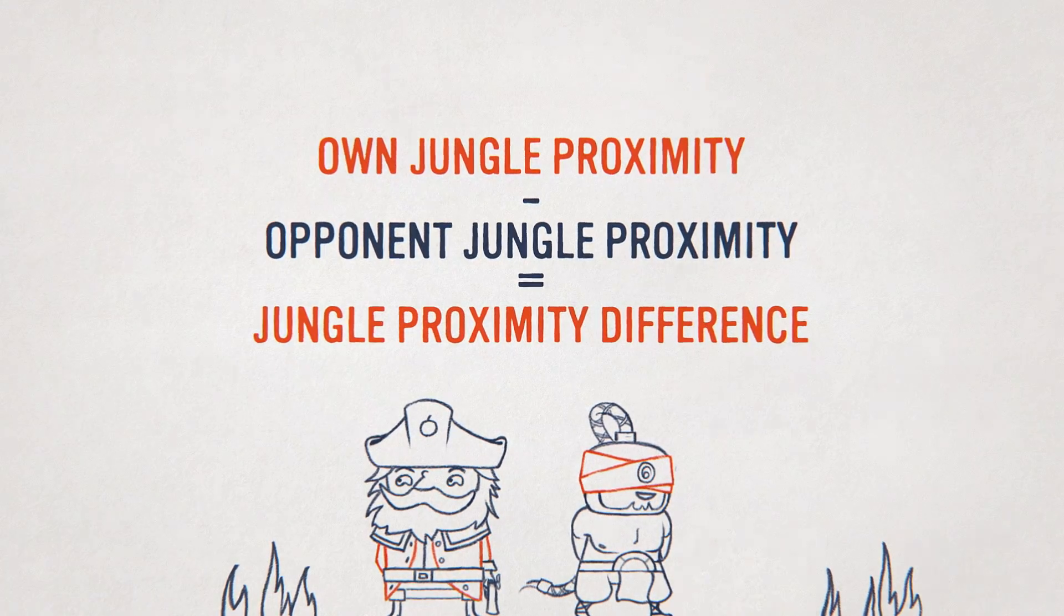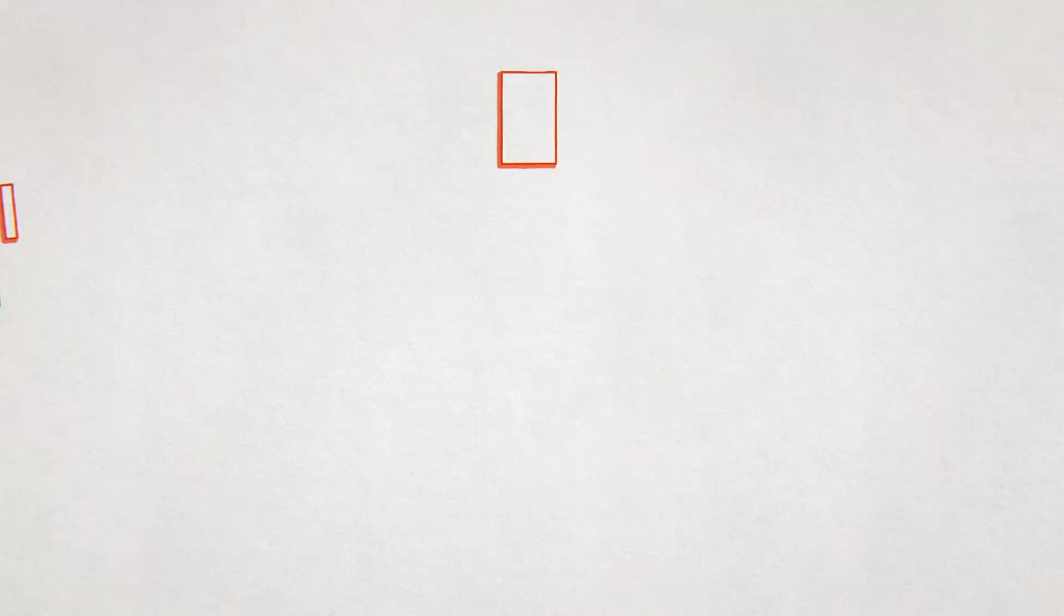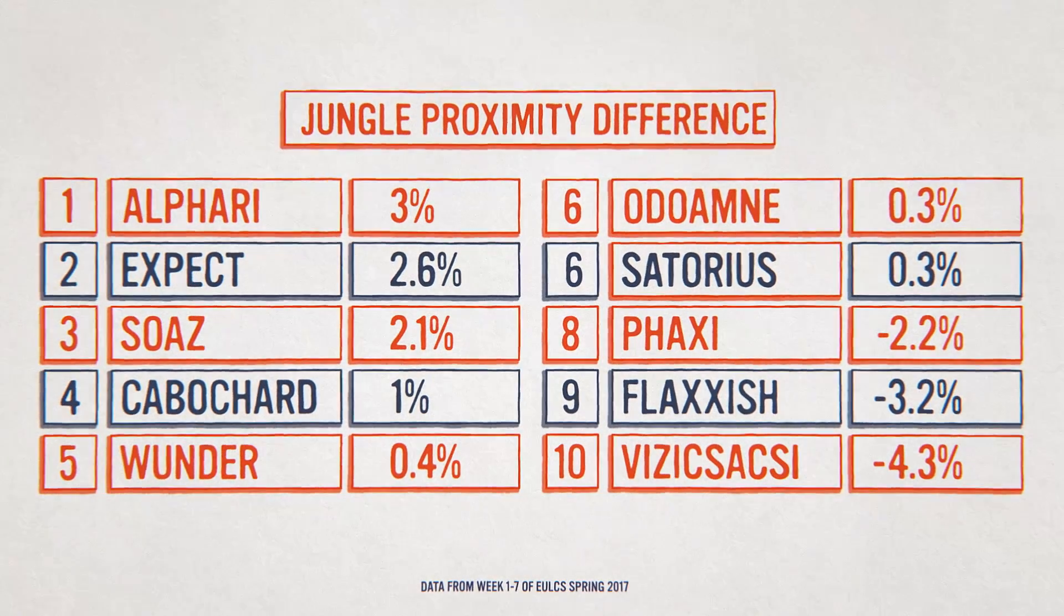The higher the difference, the better off you are in terms of jungle pressure. We use this as part of our overall weighting to take into account the effect of the jungler in the top laner's performance.